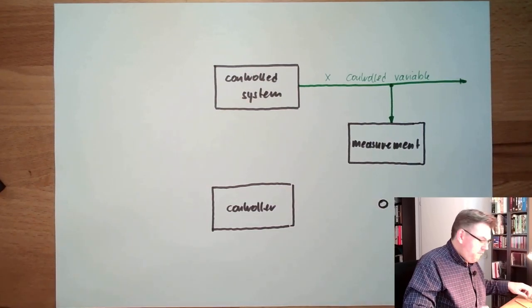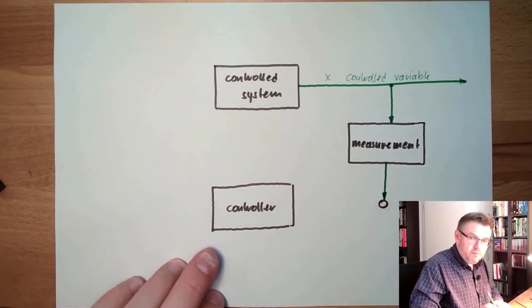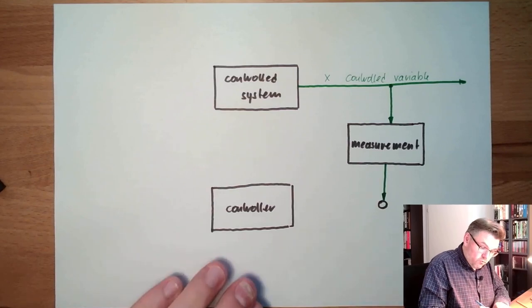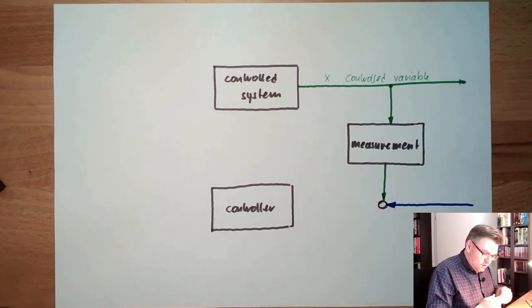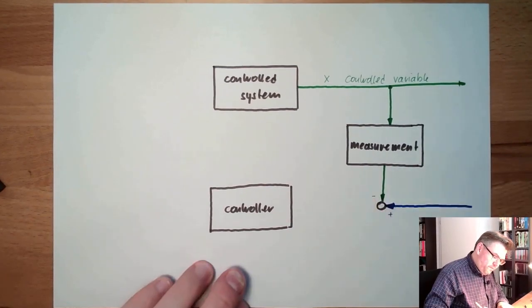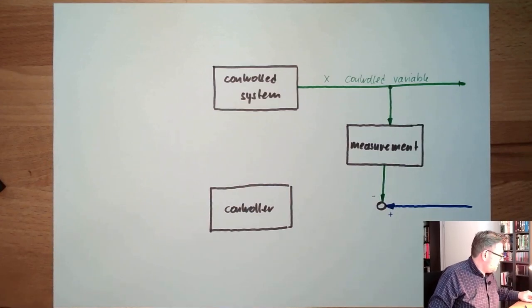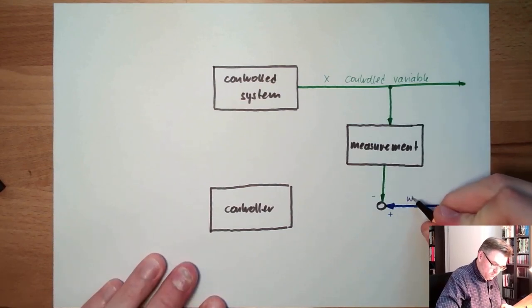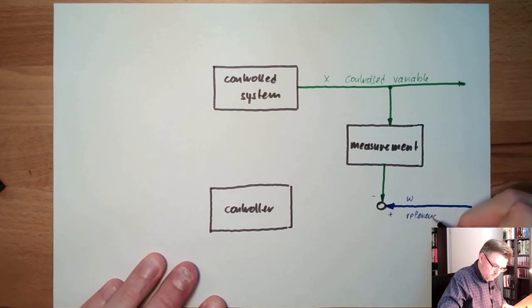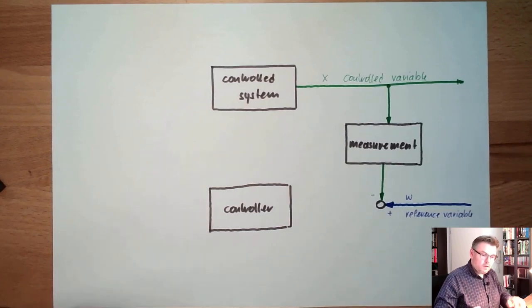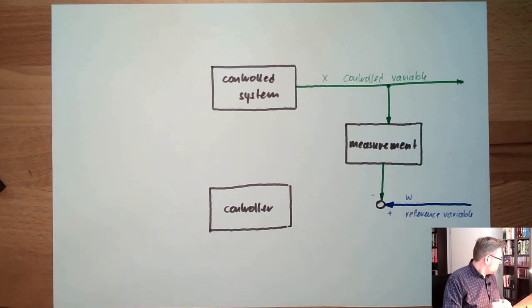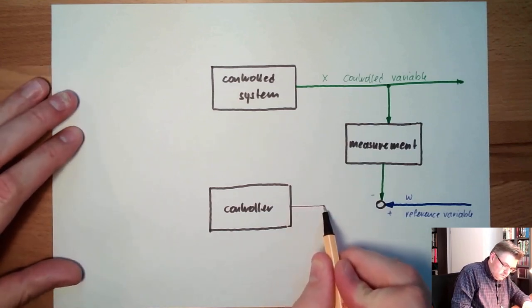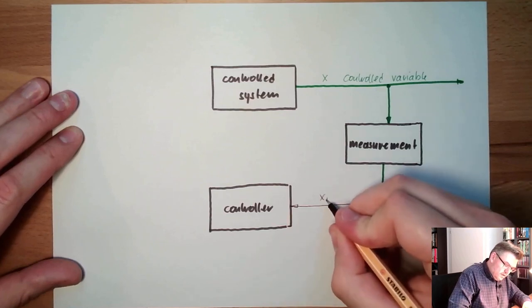There is a mixing point here. We have the measured controlled variable — this must not exactly be the same. This measured controlled variable is somehow compared: there is one plus and one minus. It is compared to a desired value, to a reference variable W. The result is the controller deviation, xd.